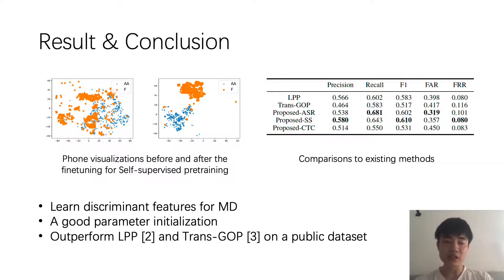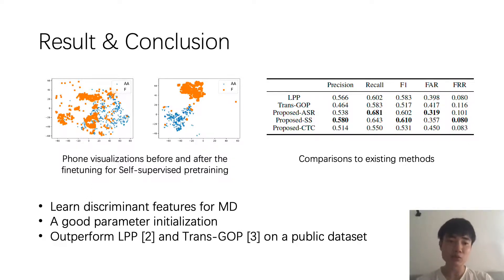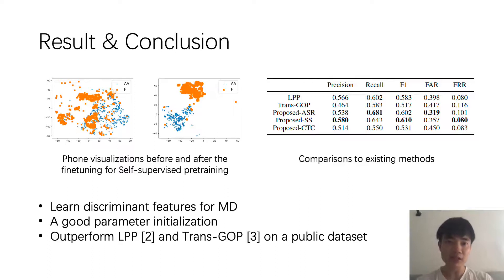the representations of two different phonemes, F and R, are grouped into two clusters in the feature space, which provides a good parameter initialization for further fine-tuning. Compared with other baselines, our approach outperforms LPP and TransGOP on a public dataset.